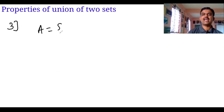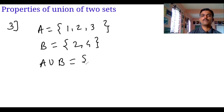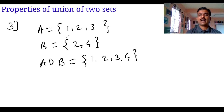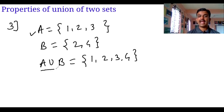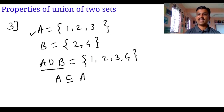The third property. A is equal to {1, 2, 3} and B is equal to {2, 4}. The union gives {1, 2, 3, 4}. Each element of set A is also an element of A union B. Each individual set is always a subset of the union of the two sets. So A is a subset of A union B, and B is also a subset of A union B.